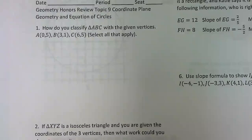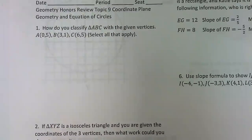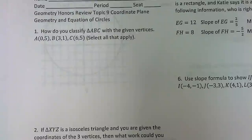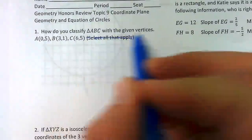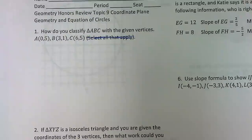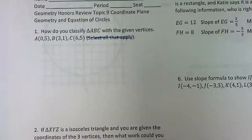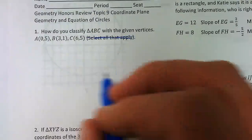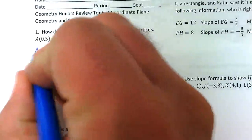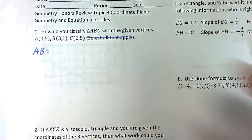We are going over every single problem on here. Classify triangle ABC with the given vertices. Yesterday I accidentally wrote 'select all that apply' because there were originally multiple choice answers - there are none there. You can classify a triangle based on its sides or based on its angles. To classify by sides, you need to know the lengths of the sides, so you can use the distance formula for each one.